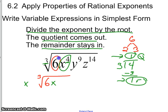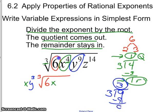Now I'm going to do y to the 9th. So I've got 9 divided by 3 is 3. So the quotient, that's y to the power of 3, comes out. There is no remainder. 3 times 3 is 9. There is no remainder, so no y's have to stay in.